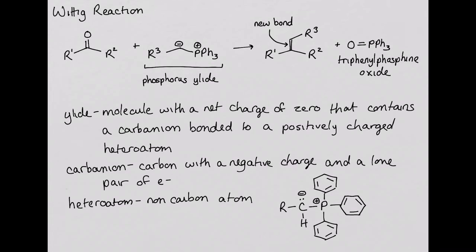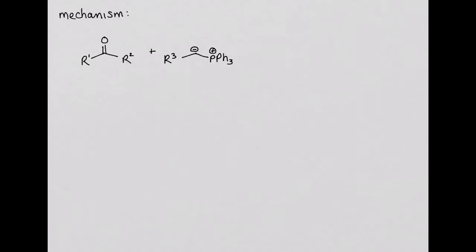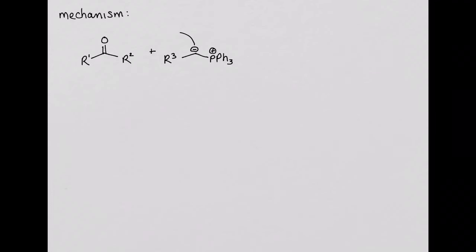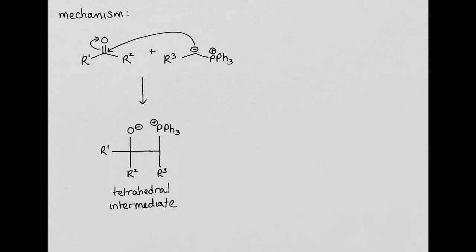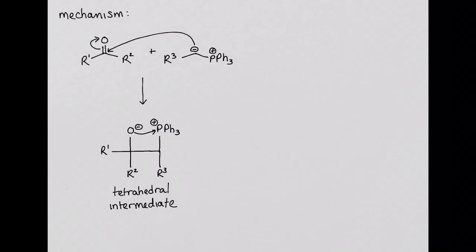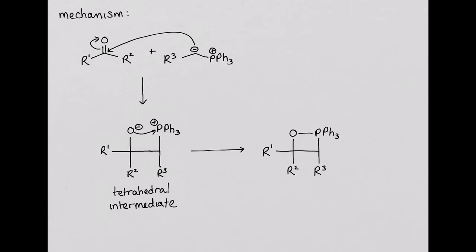Next we will look at the mechanism for the Wittig reaction. In the first step, the carbon nucleophile of the phosphorus ilid attacks the carbonyl carbon of the ketone or aldehyde, producing a tetrahedral intermediate. This tetrahedral intermediate is unstable and the negatively charged oxygen rapidly attacks the positively charged phosphorus to form a cyclic intermediate. This cyclic intermediate then rearranges to form the alkene product and the phosphorus oxide.